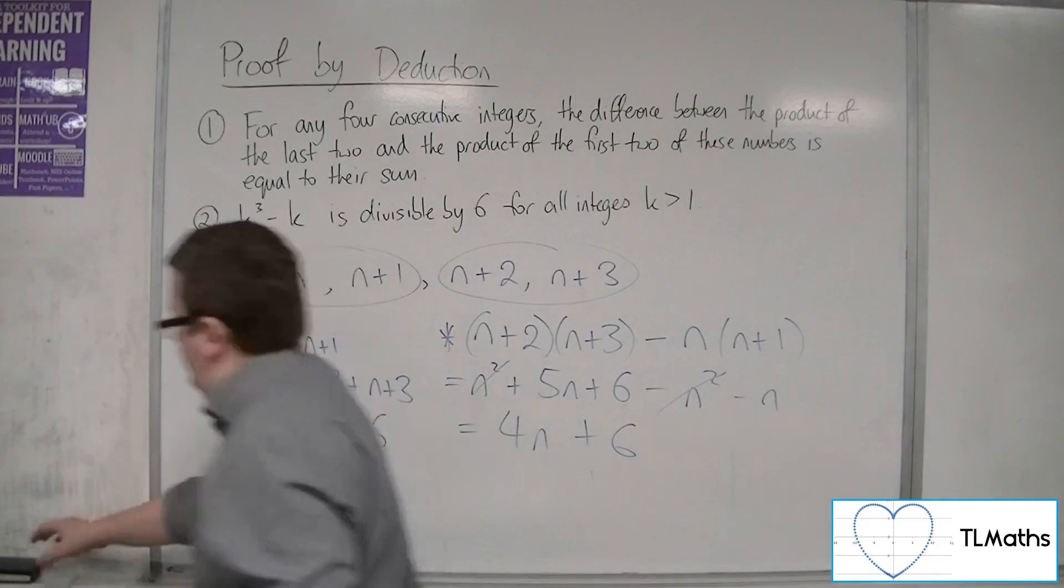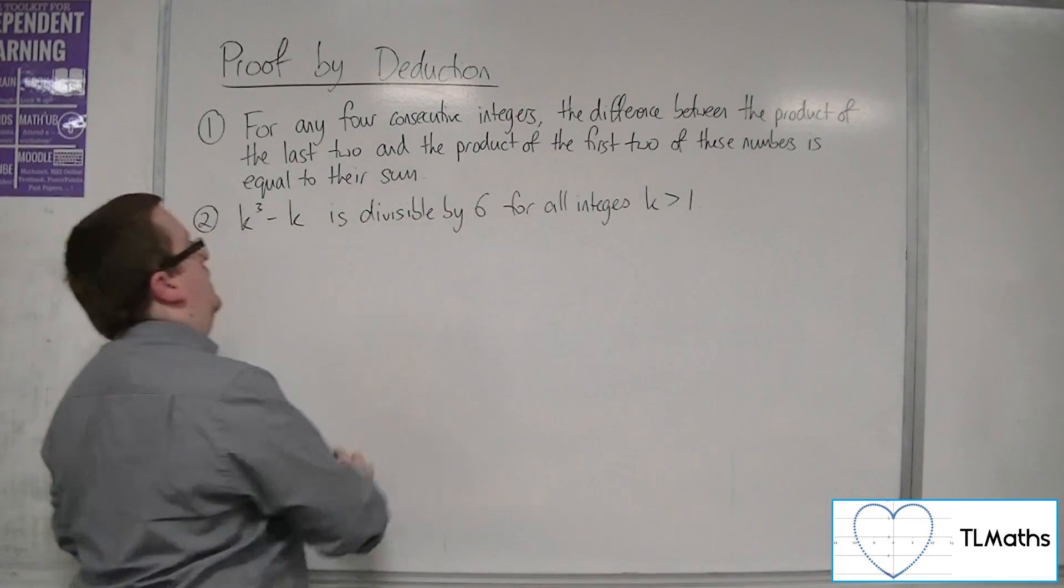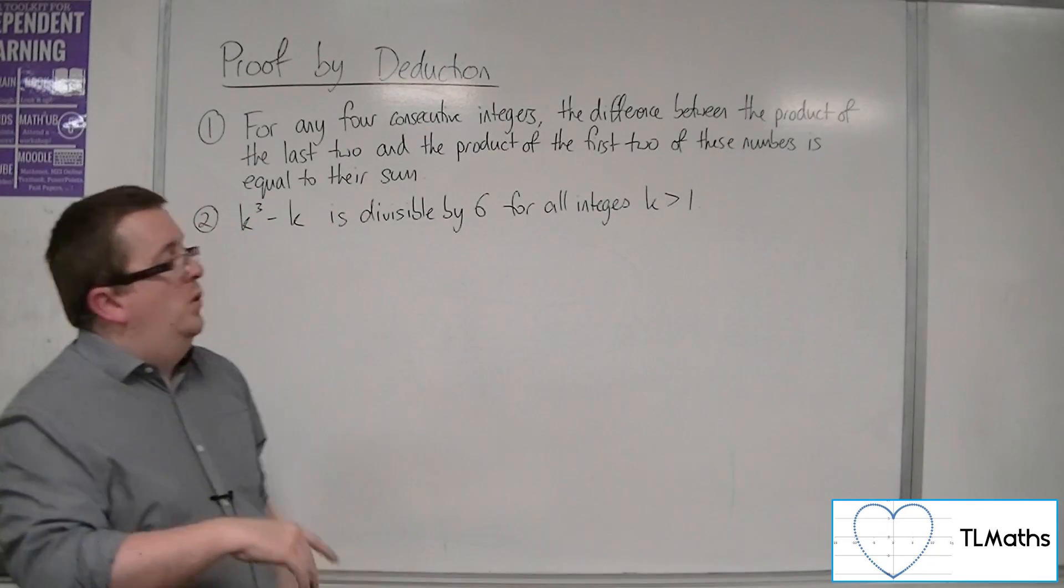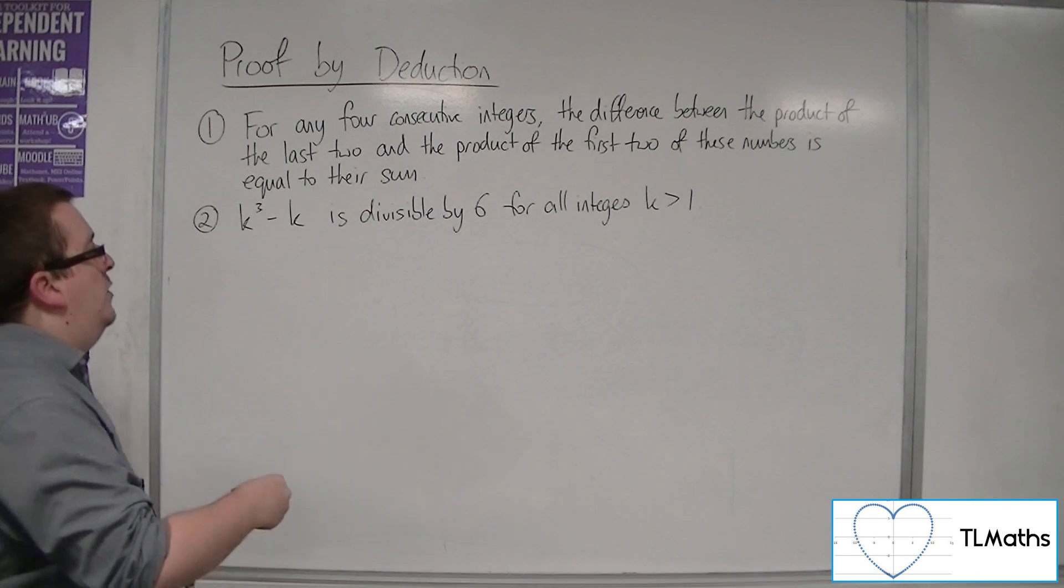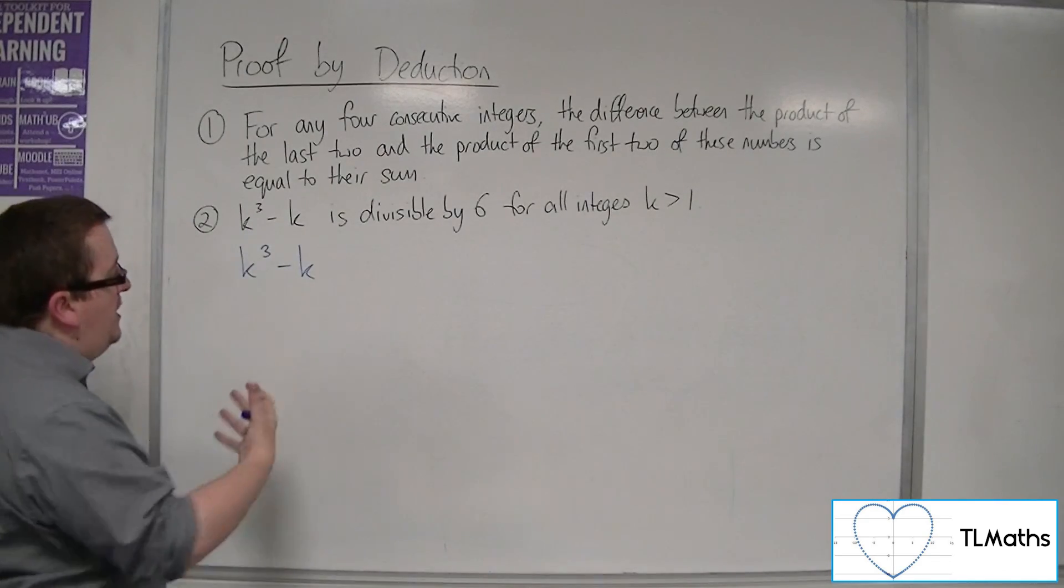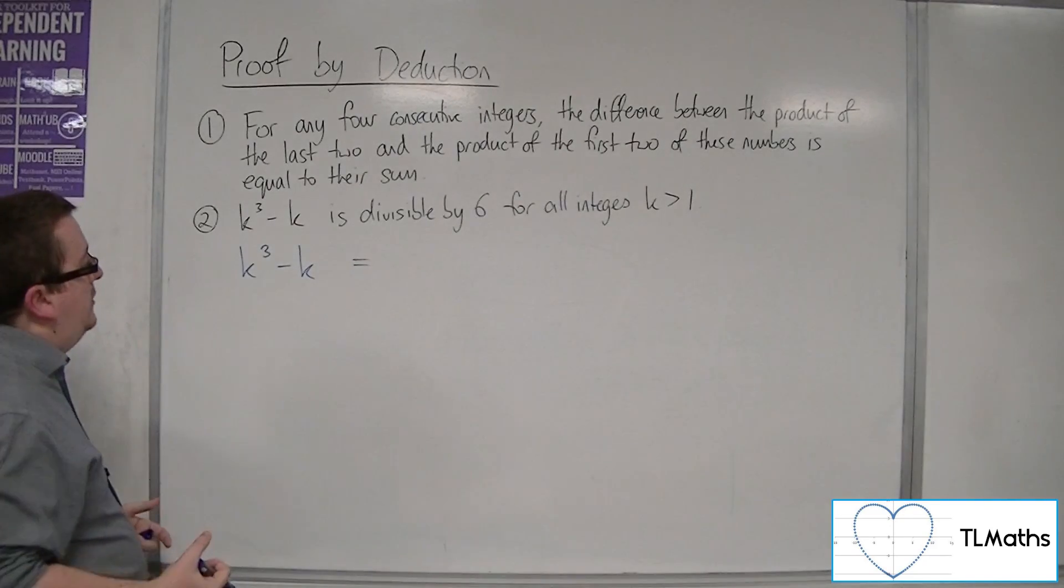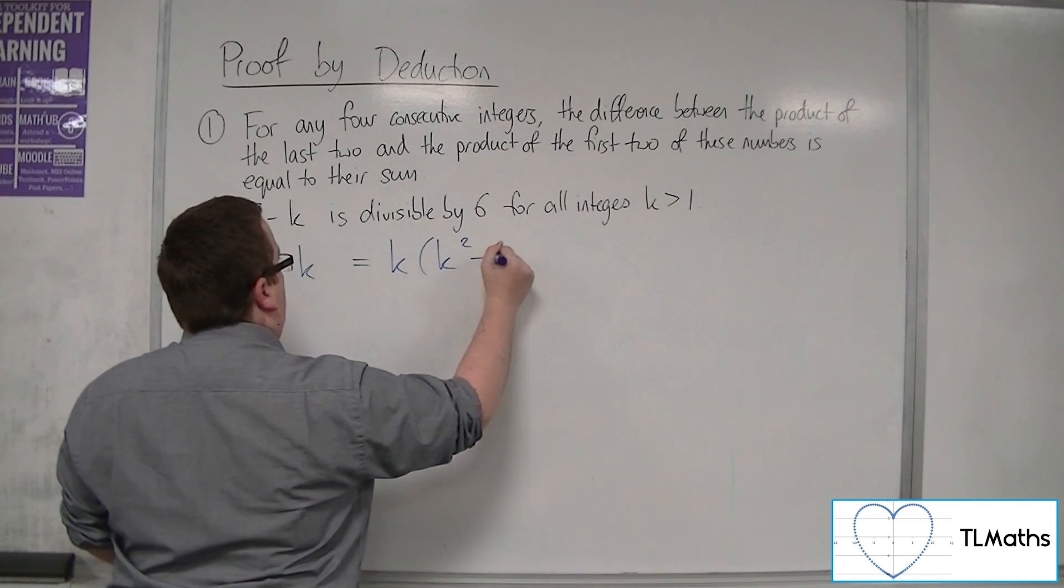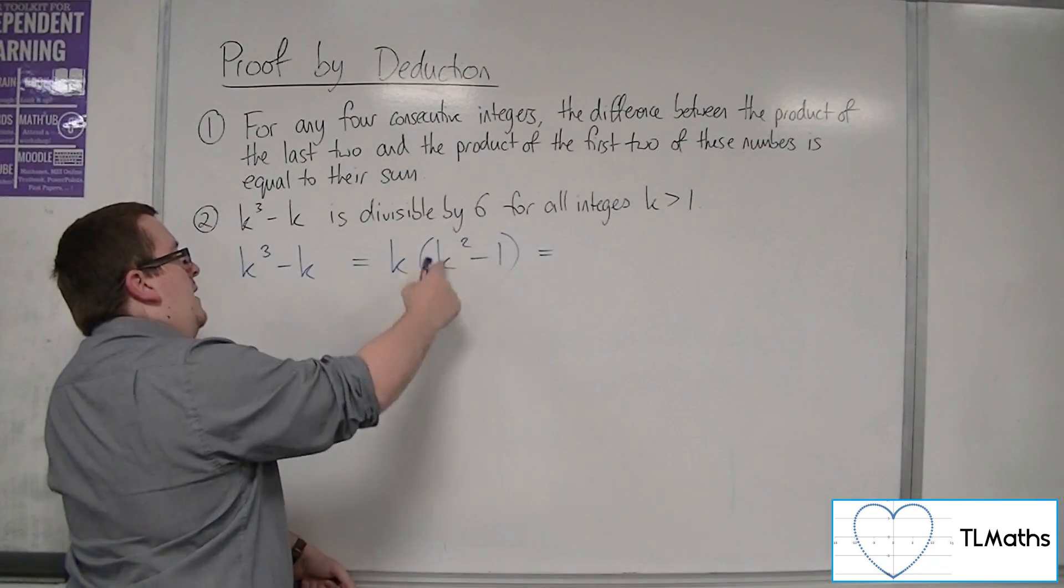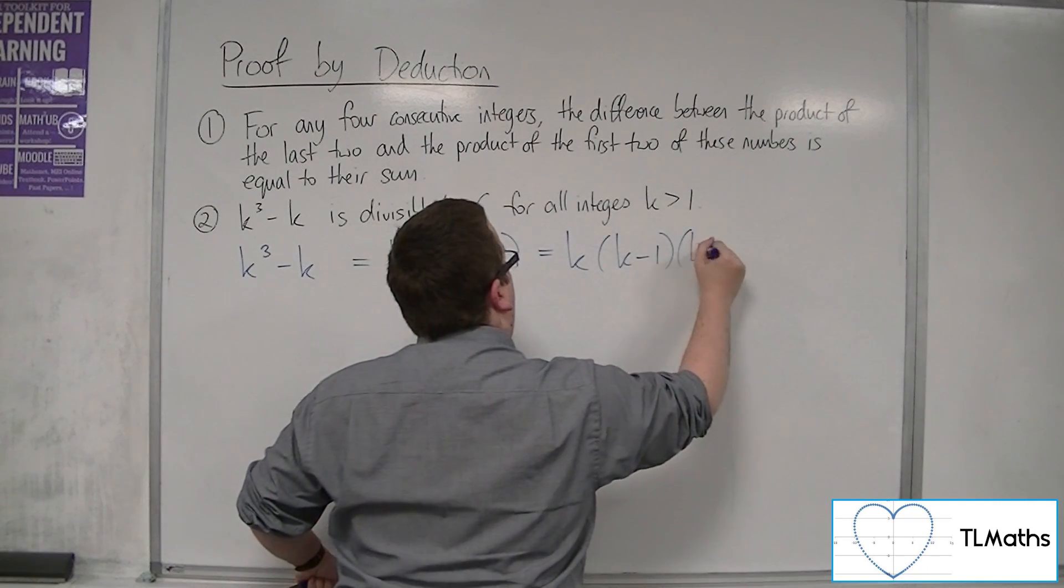So let's have a look at the next one, number 2. So number 2 is a little bit more tricky. And it says k cubed minus k is divisible by 6 for all integers k greater than 1. So if we have a look at that k cubed minus k, that looks like something that can be factorized. So that's my instinct here, my natural urge is to factorize that to make it easier for us to see what's going to happen next. So I'm going to factor out the k, and I'm going to get k squared minus 1 inside that bracket. Then, if I factorize that bracket, that's the difference of two squares. So that's k times k-1 times k+1.